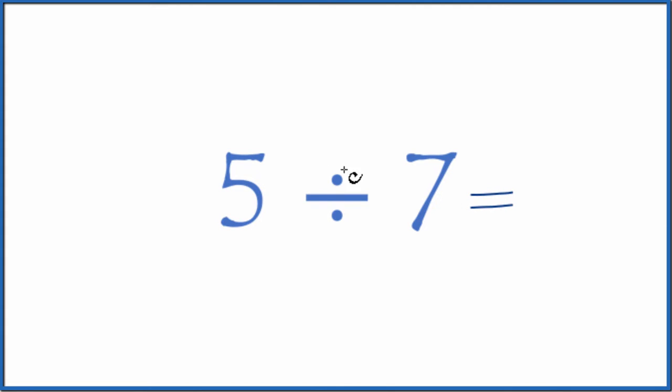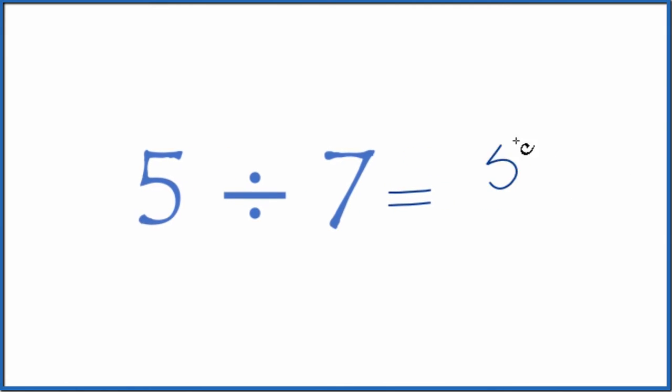First, we could think of this as a fraction. 5 divided by 7, that's the same as 5 over 7. So we could have a fraction.